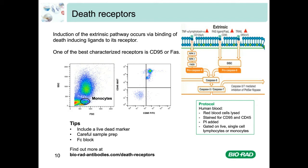Some assay-specific tips for death receptor staining: include a live-dead marker, ensure careful sample preparation especially when using primary cells, and include an Fc block, which is particularly important when looking at monocytes.